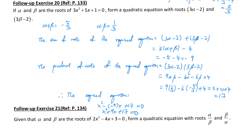The required equation is x squared minus (sum of roots) times x plus (product of roots), which simplifies to x squared plus 9x plus 17 equals 0. This is the end of this video, and also the last video for Chapter 3. We'll see you guys later.